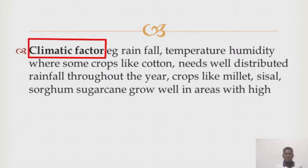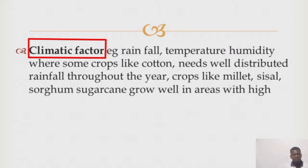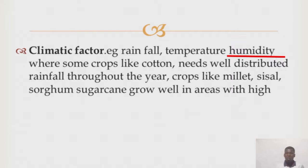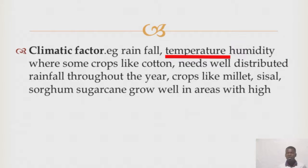Another factor is the climatic factor. Under climatic factor, we have very many elements that fall under it. We have rainfall, we have humidity, we have temperature. All these affect the distribution of crops and livestock.